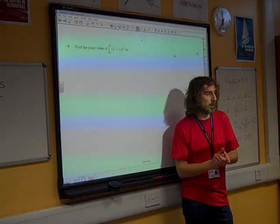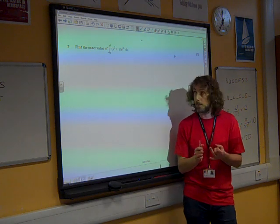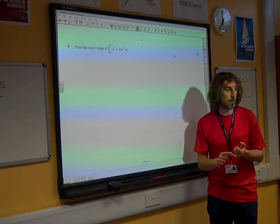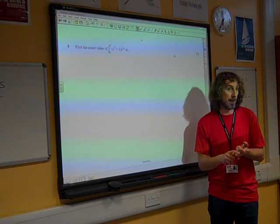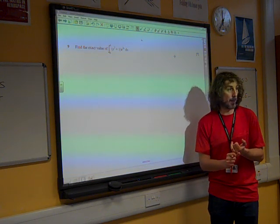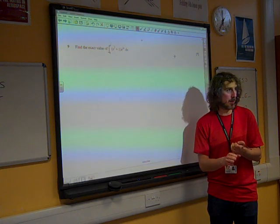So we need to decide which of these things is going to be u and which is going to be dv by dx. Now the thing we're choosing as u wants to be able to be differentiated, and hopefully to get nicer when you differentiate it, to get more simple when you differentiate it.